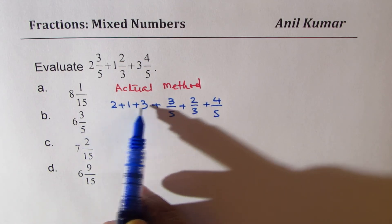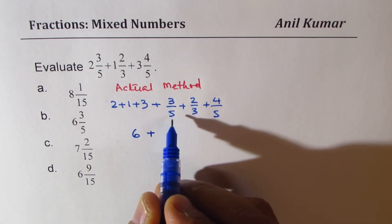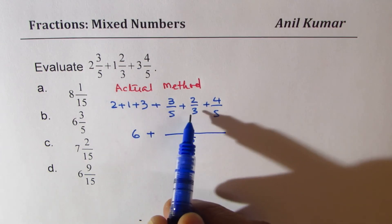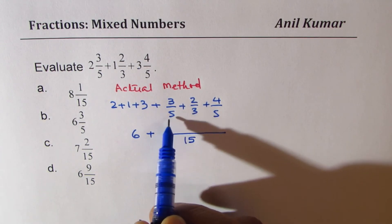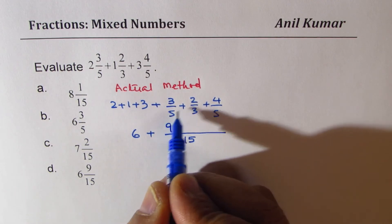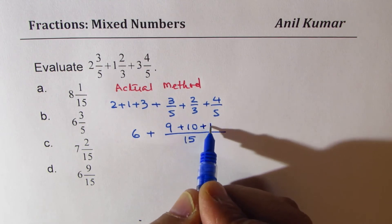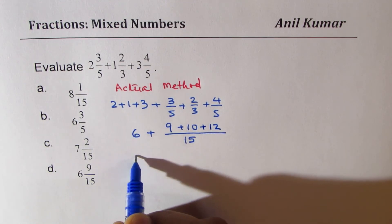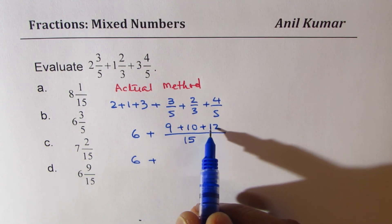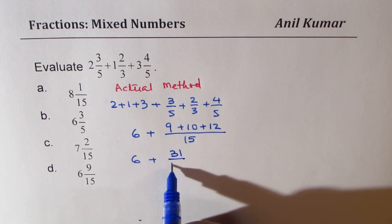So this is 3 plus 3 is 6, plus here you have to take common denominator, which is 5 times 3, 15. So multiply with the missing factor. So it will be 3 times 3 is 9, 5 times 2 is 10, and this will be 3 times 4, 12. So what you get is 6 plus 31 over 15.